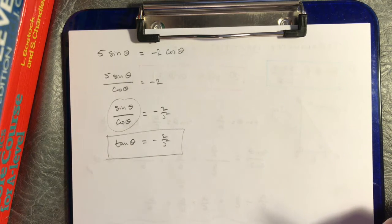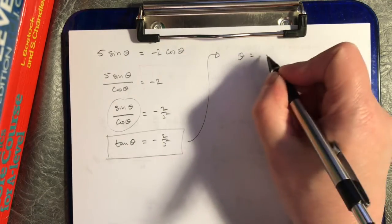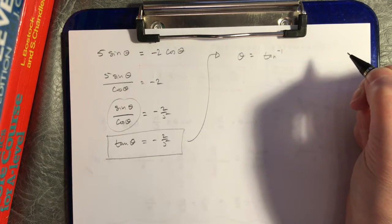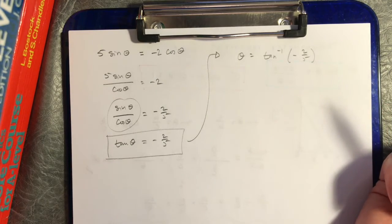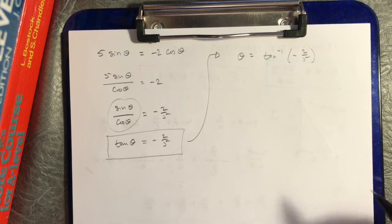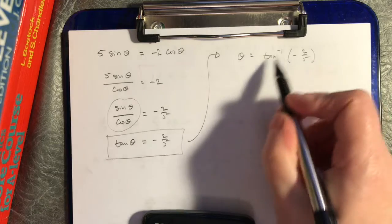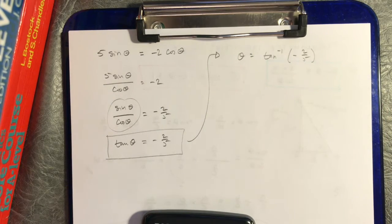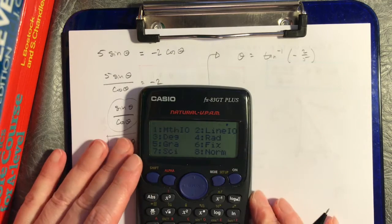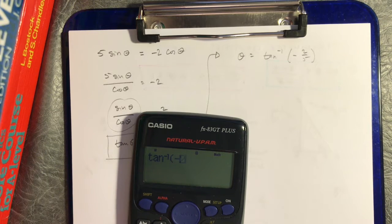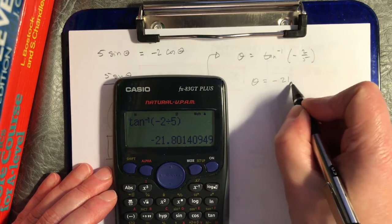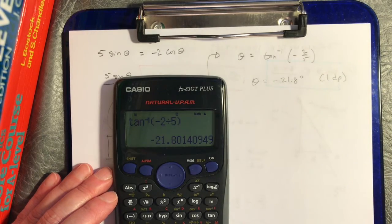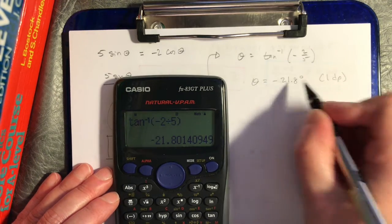The tangent of theta equals minus two fifths, and now I'm in a situation I know how to handle. To write it properly: the inverse tangent of negative two fifths will give me the angle. Do not say 'tangent to the minus one' — that means something different. We pronounce it inverse tangent. Make sure you're in degrees; if you do inverse tangent of minus two fifths, the calculator throws out an angle of negative 21.8 degrees. I'm only going to one decimal place today.